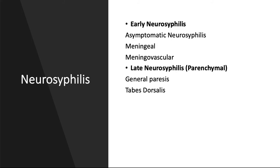Neurosyphilis accounts for 10% of cases of tertiary syphilis and exists in five forms, which may be further classified as early and late neurosyphilis. Asymptomatic neurosyphilis is the most common form and occurs before symptomatic syphilis develops. Patients are unaware that they are affected and have no signs of neurological disease. It is defined by the presence of CSF abnormalities in a patient with serological evidence of syphilis but no neurological symptoms. Prior to penicillin, the diagnosis of asymptomatic neurosyphilis was significant in predicting the prognosis and outcomes of patients regarding the neurological sequelae of syphilis.